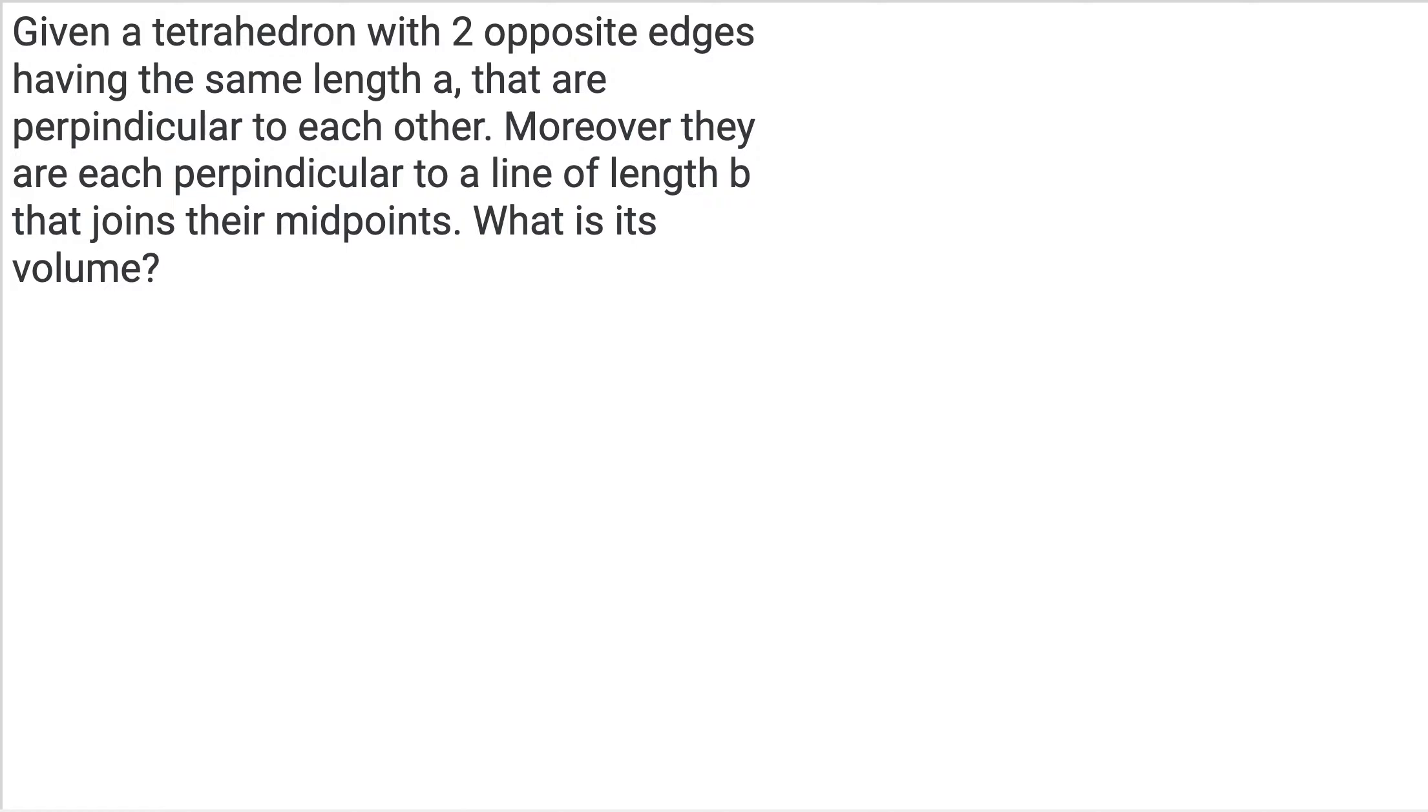Sorry, that wording is wrong. We have a tetrahedron with two opposite edges having the same length A that are perpendicular to each other. Moreover, they are each perpendicular to a line of length B that joins their midpoints. The question is: what is its volume? Take a couple seconds to try this out, then we'll give you some hints and get on with the proof.